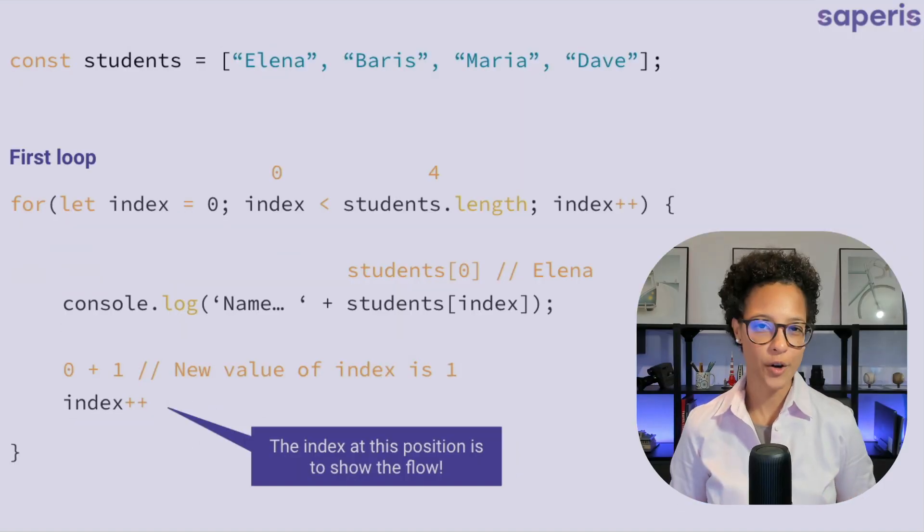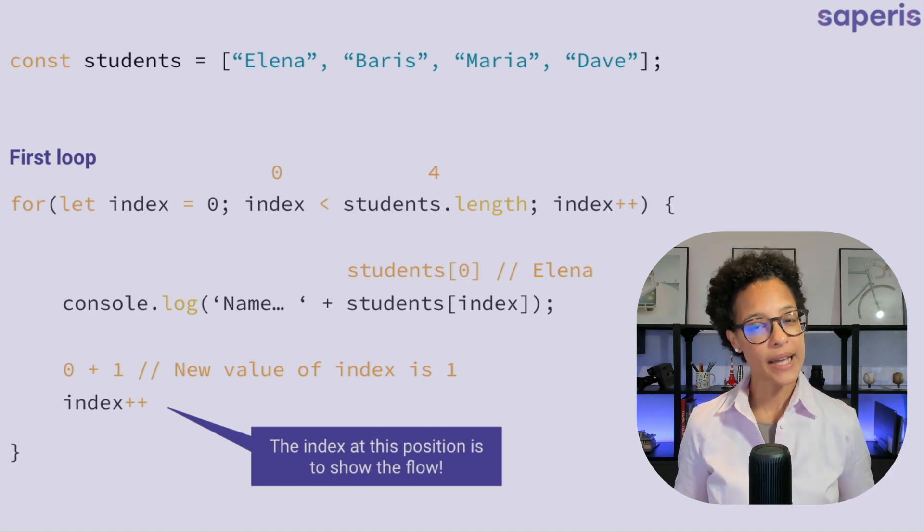What happens on our first loop, on our first iteration? Well we set our counter to zero. So index equals zero. And then it's going to do the first check. It's looking for is index lesser than students dot length. Length is a property on the array and it gives us back the amount of elements or the number of elements in the array. So in this case four.